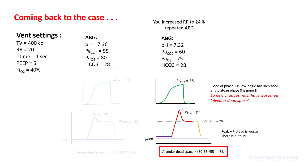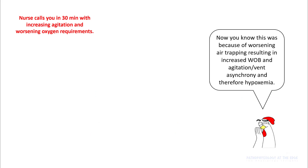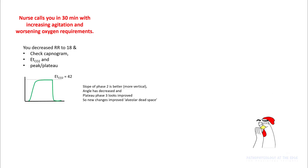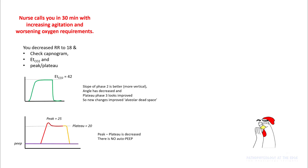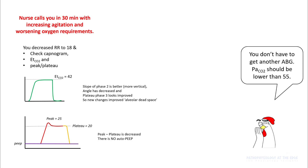The alveolar dead space fraction is now 45%. So when the nurse calls 30 minutes later with increasing agitation and worsening oxygen requirement, you already know this is because of worsening air trapping, which has resulted in increased work of breathing — that's why the patient is agitated and hypoxemic. You drop the rate to 18, look at your capnogram, end-tidals, and peak and plateau pressures. The slope of phase 2 is now better, end-tidal is 42, and peak minus plateau has decreased. You don't have to get another ABG. Your PaCO2 should be around 55, as in the first ABG.